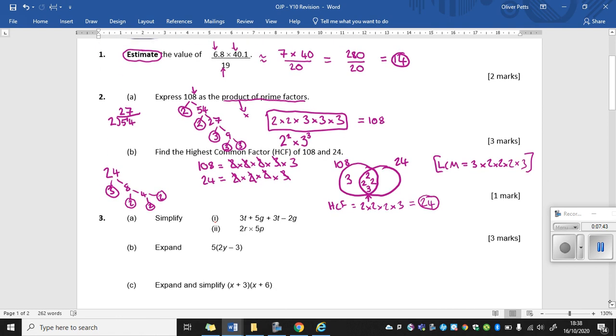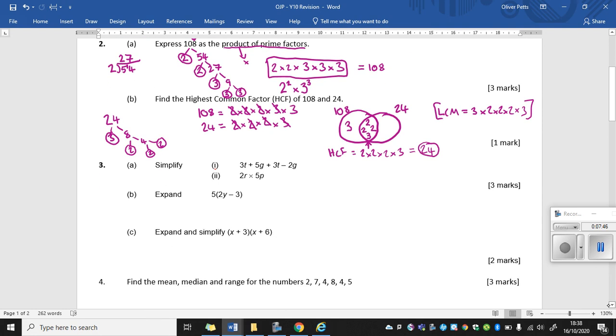Moving on to question 3. So some algebra. So simplify. So I need to tidy up what I've got here in the first part. So I've got Ts and I've got Gs. So I can collect the Ts together. So I've got a 3T. And I've got a plus 3T there. So collect those. That will give us a 6T. I've then got a plus 5G. So that's positive. Then I have to take away 2G from that. So 5G take away 2G is 3G. And that's a positive 3G. So I'm going to put a plus before it. So that's 6T plus 3G.